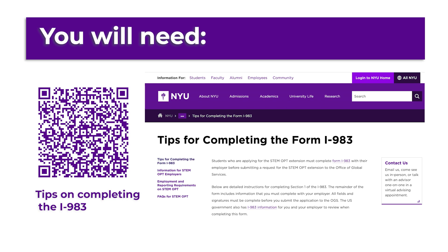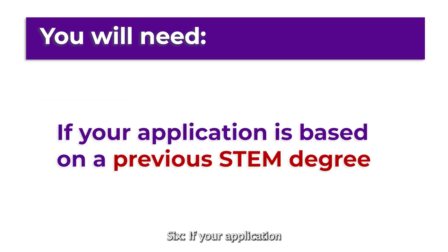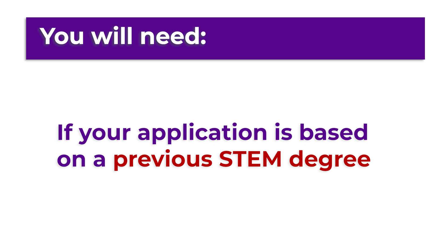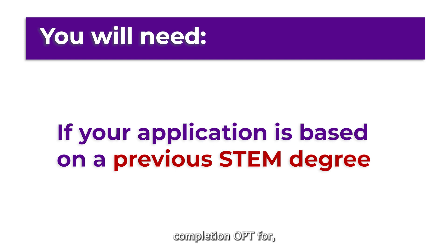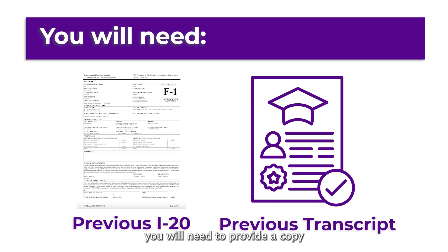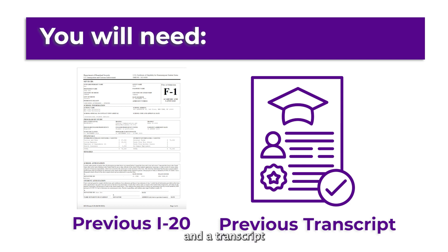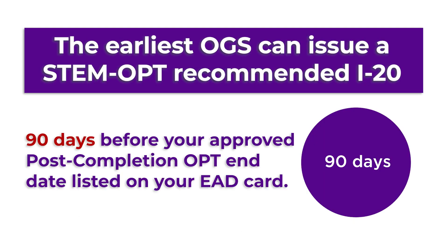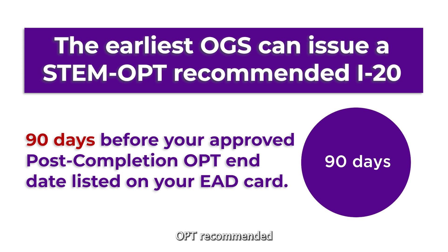5) A Form I-983 completed by you and your employer — review our tips on completing the I-983. 6) If your application is based on a previous STEM degree, prior to the degree you are currently on post-completion OPT for, you will need to provide a copy of your latest I-20 from that degree and a transcript confirming completion of that degree program.